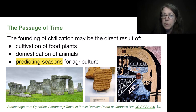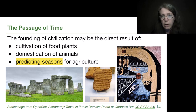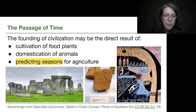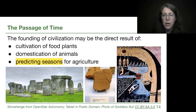Predicting seasons is incredibly important for getting a high enough food yield. Knowing when to put plants in the ground and when to harvest them is incredibly important for making sure you have what you need to feed your people. On this slide we have a couple of notes on really early ways of cataloging astronomy.